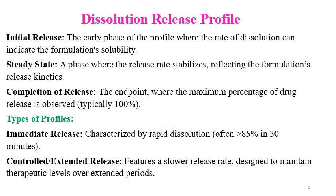Release Profile can be divided into categories: Initial Release, Steady State, and Completion of Release. In the early phase of the profile, the rate of dissolution can indicate the formulation solubility — that is Initial Release. Steady State is the phase where the release rate stabilizes, reflecting the formulation release kinetics. Completion of Release is the end part of the profile — the point where maximum percentage of drug release is observed, typically above 90%, 95%, or 100%. Types of Release Profiles include IR Release, ER Release, Modified Release, Controlled Release, Sustained Release, Prolonged Release, or Delayed Release.